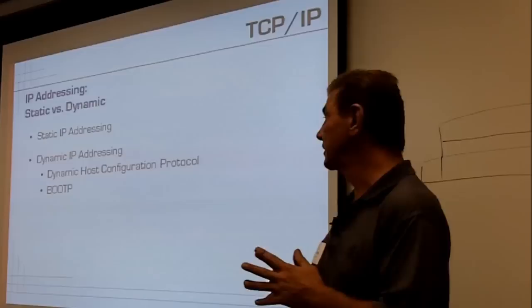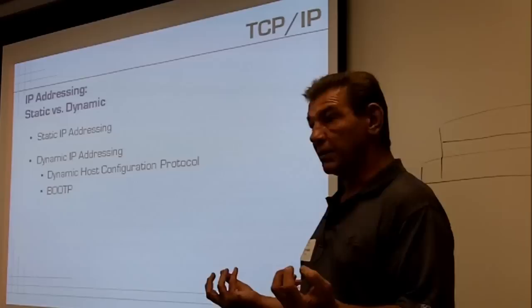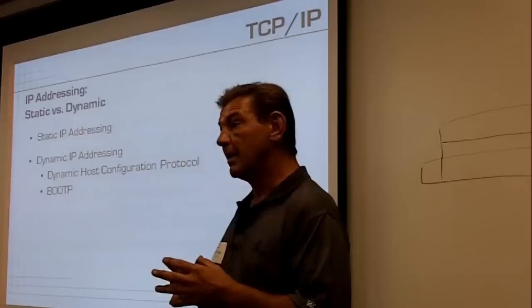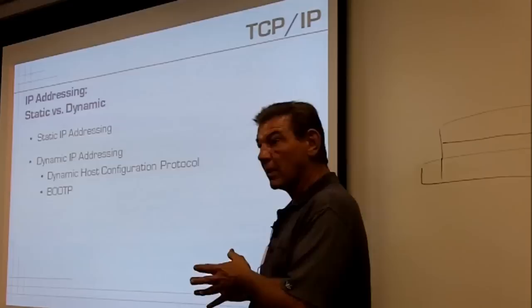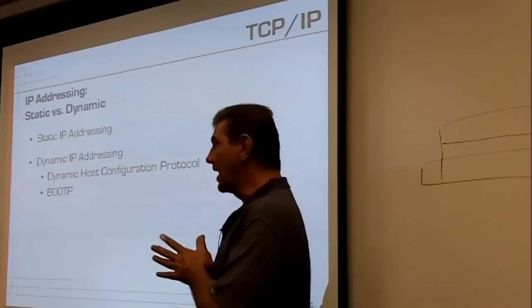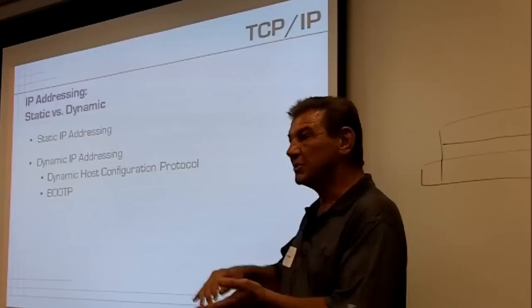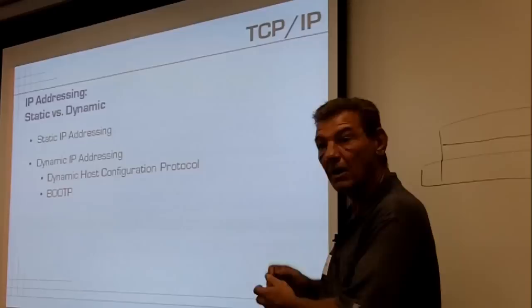Static versus dynamic IP addressing is one of the biggest differences between controls networks and corporate networks. With controls networks, we use static IP addressing because we need to know where our PLC is. On a corporate network, we use DHCP — Dynamic Host Configuration Protocol — because managing 254 static IP addresses is a real pain. We can't have any duplicates, so keeping track of those in a spreadsheet and avoiding duplicates becomes quite a chore on a larger network.